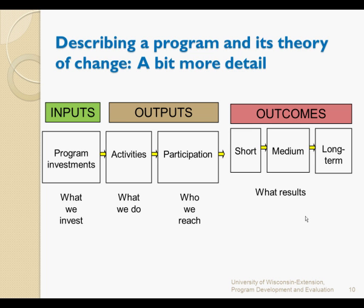There are many different things that can be done, but let's focus on making sure that newborns nurse within one hour of birth. So our medium-term outcome would be that newborns are nursed within one hour of birth. If that happens, we would normally expect some reduction in neonatal mortality. But what would need to happen in order for mothers to nurse their babies within one hour of birth?